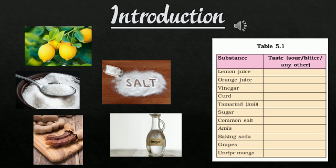Coming to the taste of these substances — can you just recall the tastes of these substances and solve this table, that is Table 5.1? We have lemon juice, orange juice, vinegar, curd, tamarind, sugar, common salt, amla, baking soda, grapes, and unripe mango. Note down the taste for each individual substance. This is one of the activity parts for you. You will find that some taste sour, some taste bitter, some taste sweet, and some will be very salty.